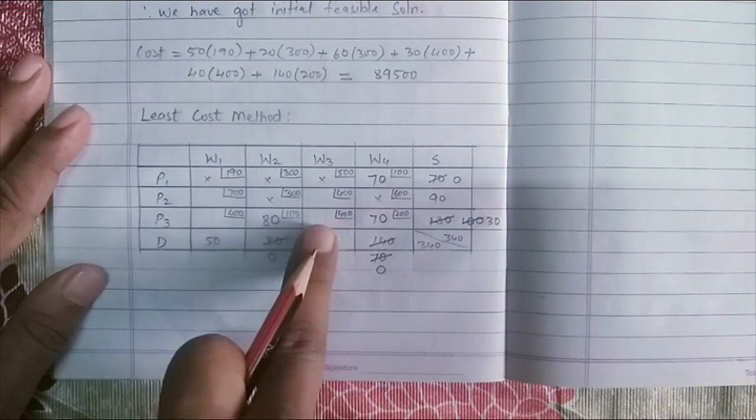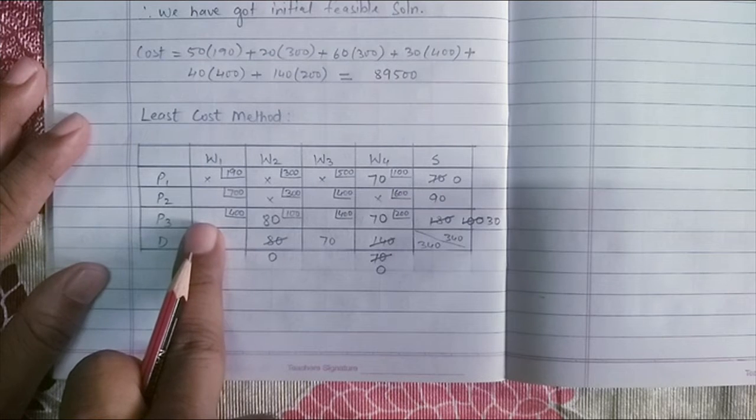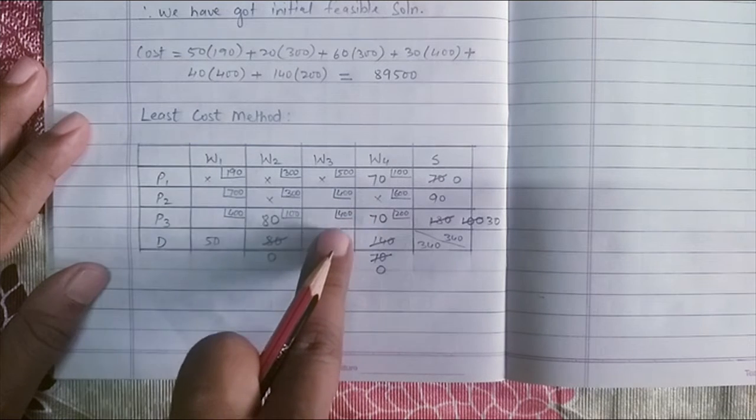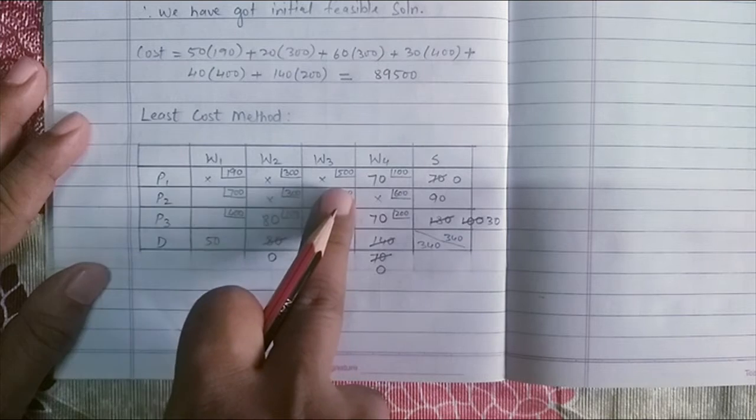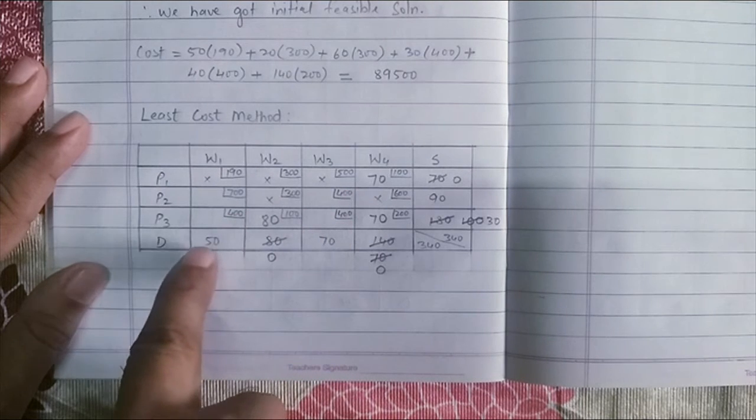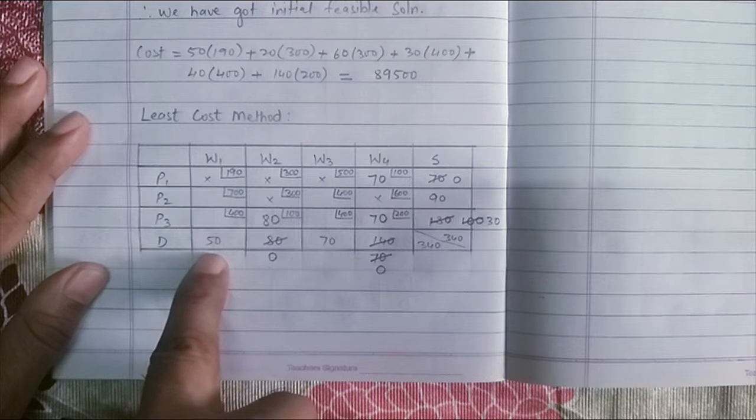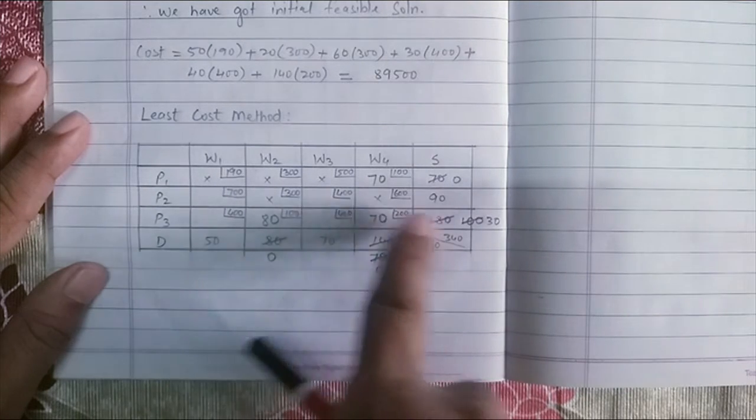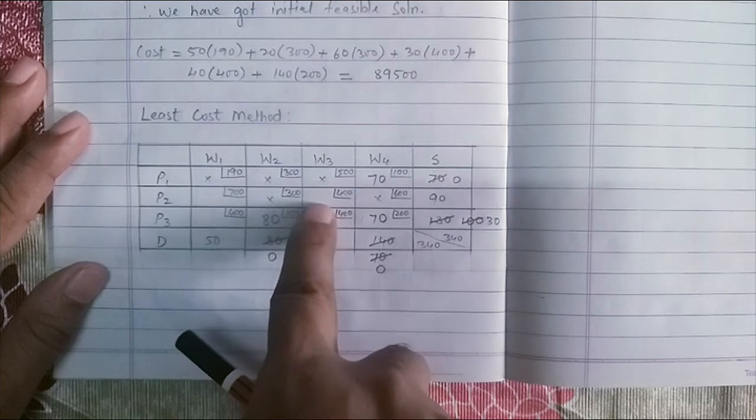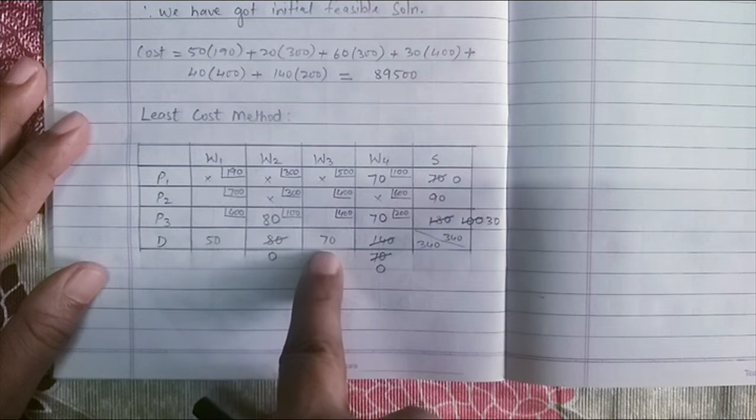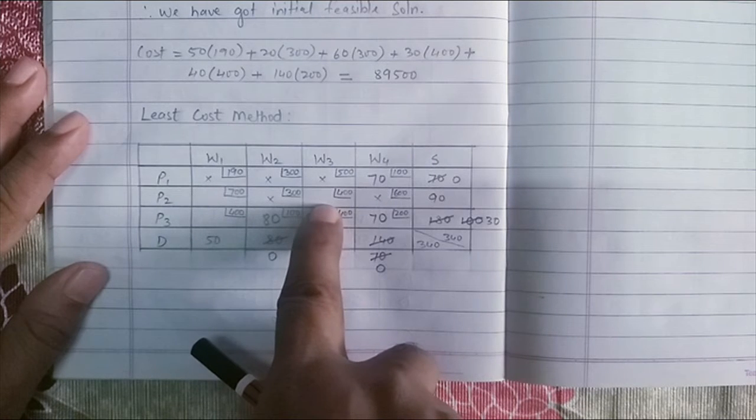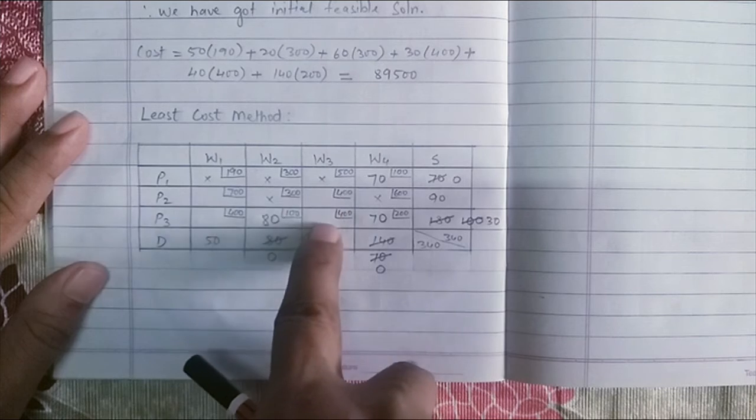The next four empty cells are there where there is no allocations and the minimum cost is 400. Now, there is a tie here. There are three values which has 400. So I will check which cell can have maximum allocations. Here, you can see I can have only 30. Even here, I can have only 30 whereas here, I can assign 70. So my next allocation will happen in P2, W3 because maximum number of units can be assigned in this particular cell compared to the other two cells.